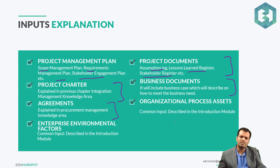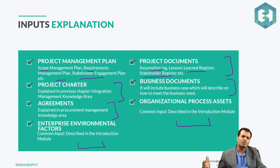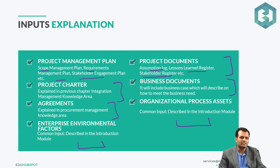As far as the business document is concerned, it includes the business case, which describes how to meet the business need — why you're doing this project, the goals, whether it meets organizational strategies, and the go/no-go decision. We also have the OPA and EEF: EEF covers organizational culture, and OPA covers processes, policies, PMIS, and lessons learned.